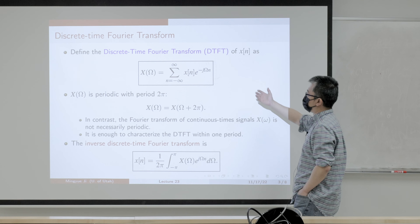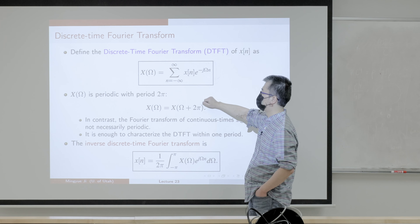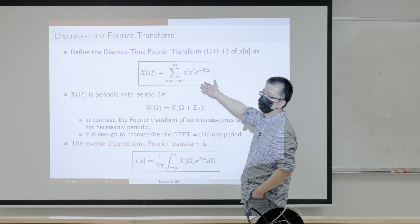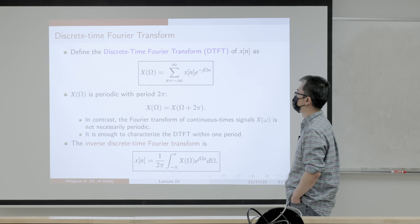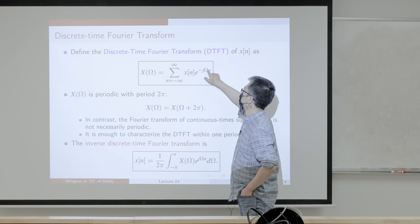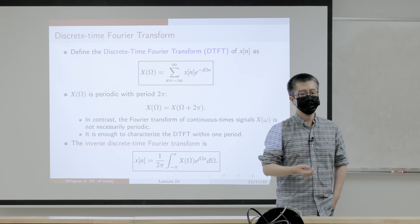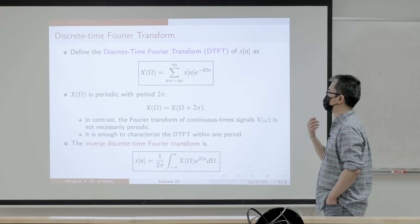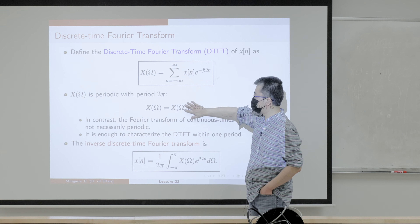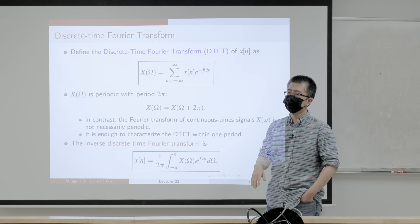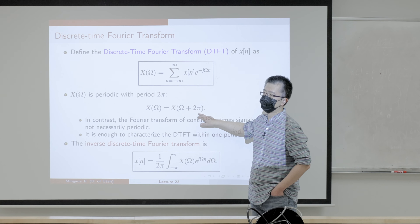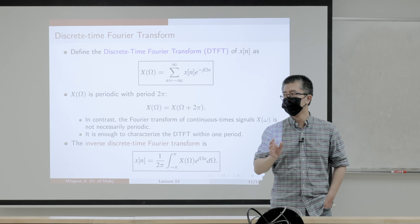We derived the DTFT formula. If you see the definition of the DTFT, it will be extremely similar to the definition of the CTFT — the only difference is that we have a summation instead of an integral. We also have a new definition of frequency, omega, which is the so-called digital frequency. This signal is periodic, and 2 pi is one period — but by no means is 2 pi necessarily the fundamental period.